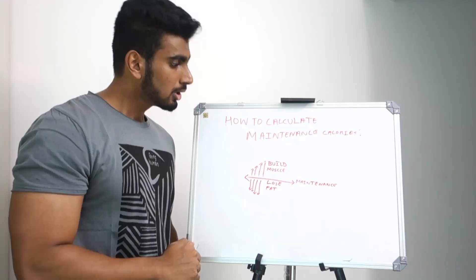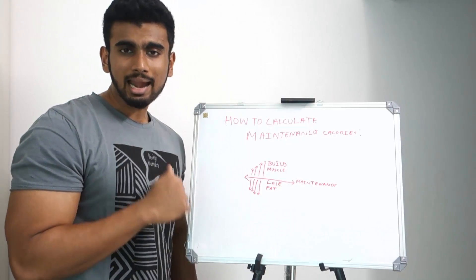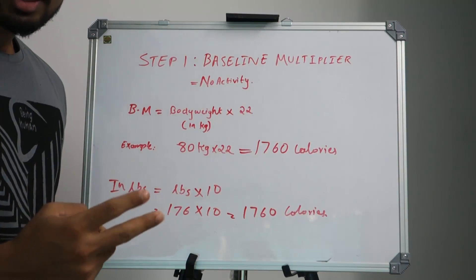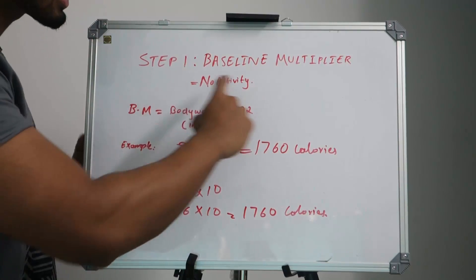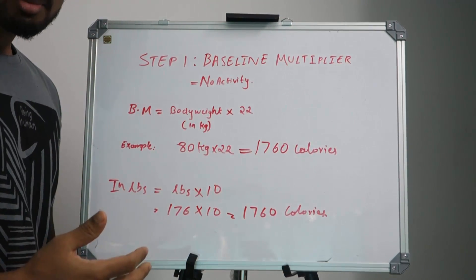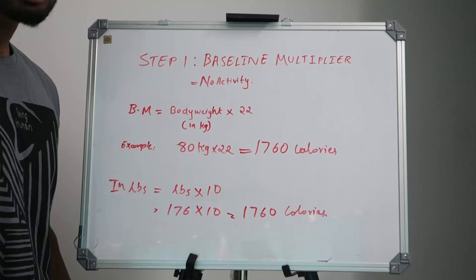There are basically two steps in this simple way of calculating your calories. The first step is called baseline multiplier. Baseline multiplier is where you're assuming that your body doesn't do any activity.